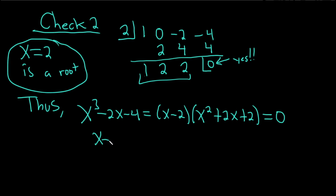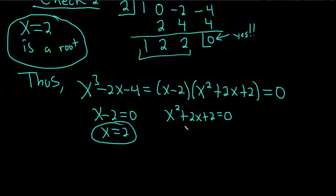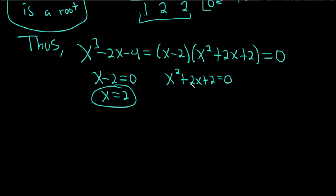And you want to set this equal to 0. That means you set each piece equal to 0. We already have 2, we already know it's an answer. So we just have to do this. So to solve this, we can use the quadratic formula, but maybe let's complete the square because that might be easier.